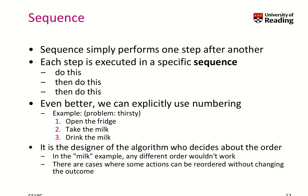We can also use numbering. For example, if you are thirsty, you could say: first, open the fridge; second, take the milk; third, drink the milk — and that solves the problem. You cannot drink the milk before you open the fridge or take the milk. There are cases where you can reorder some actions without changing the outcome, but order generally matters.